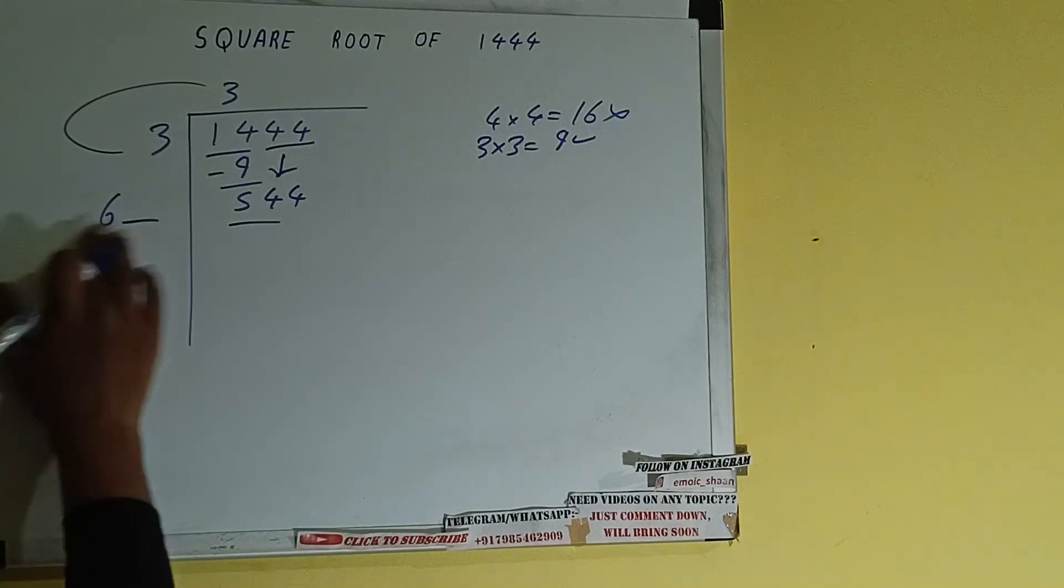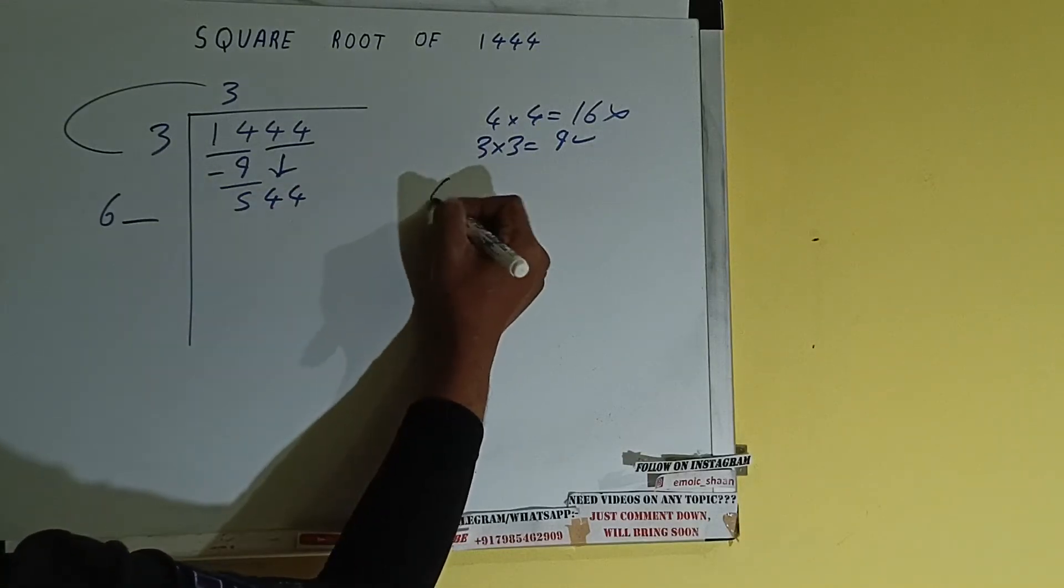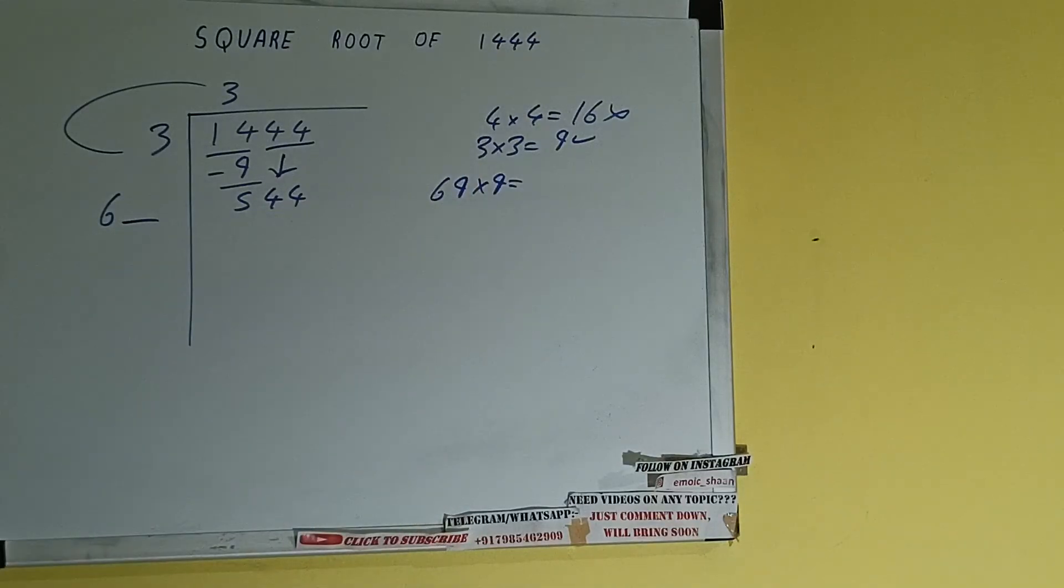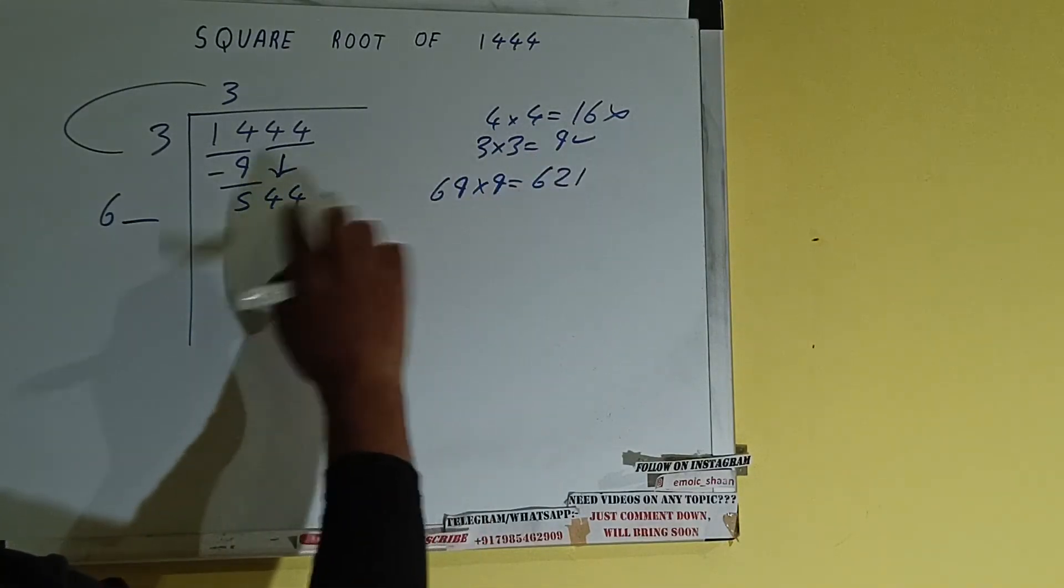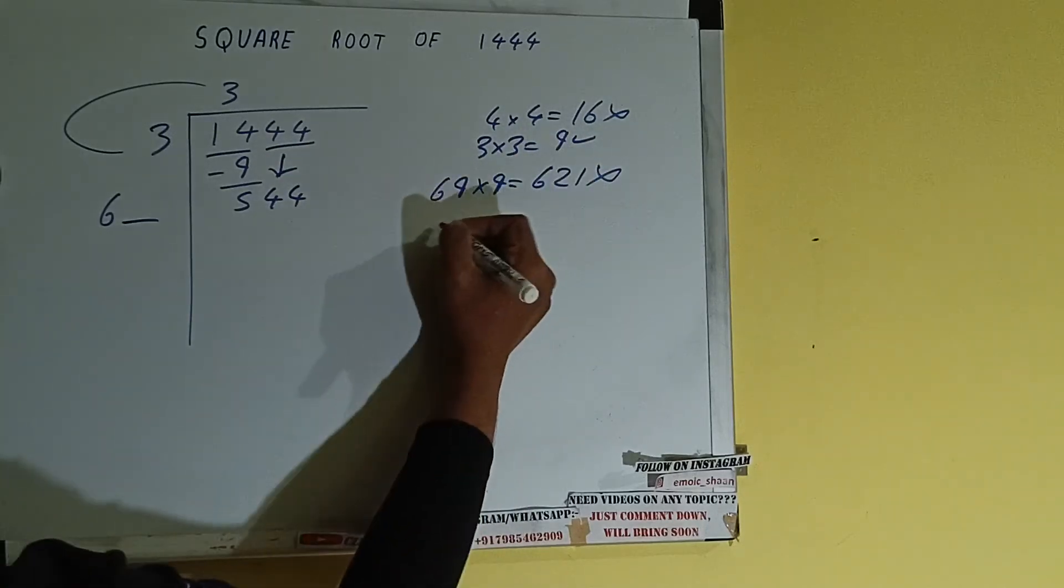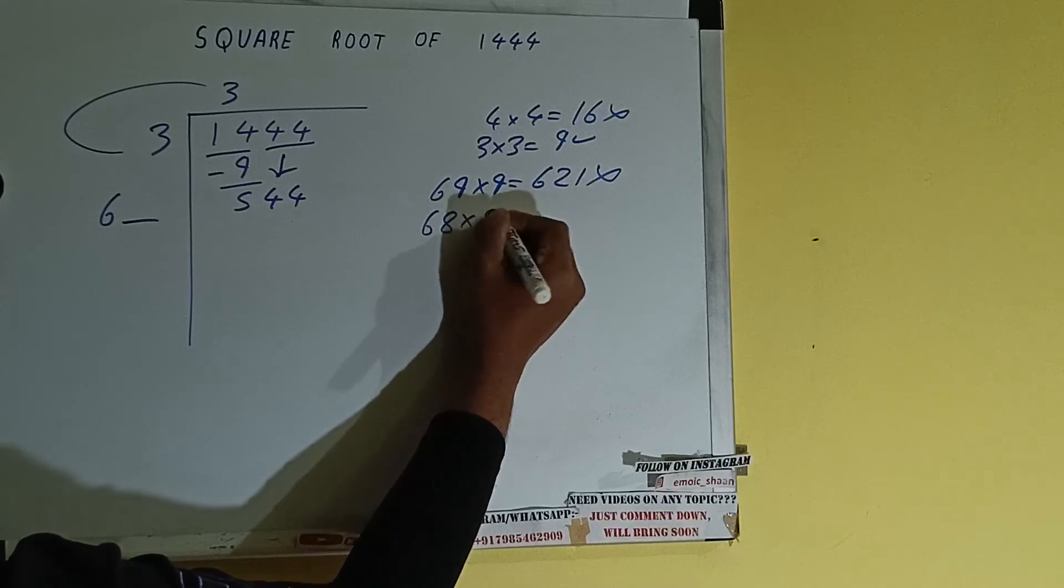So we can try 9. 69 into 9, we can try. It will be 621, which is greater than this, so we cannot take it. Let's try 8. 68 into 8, we can try.